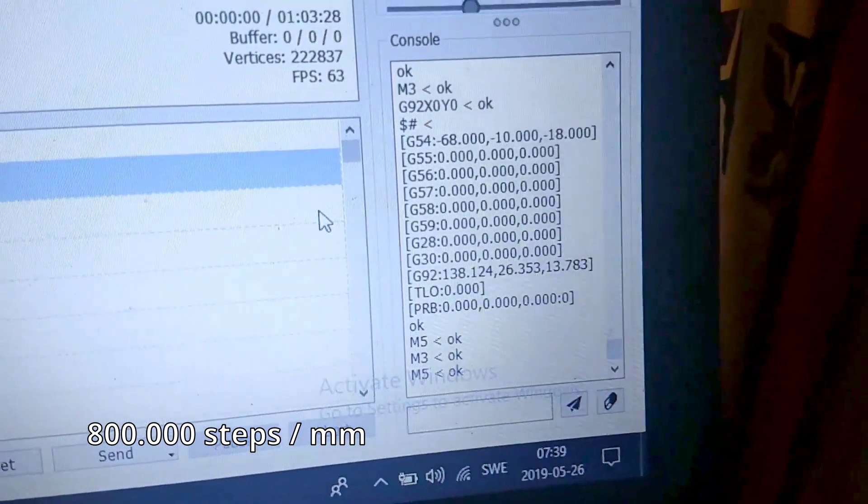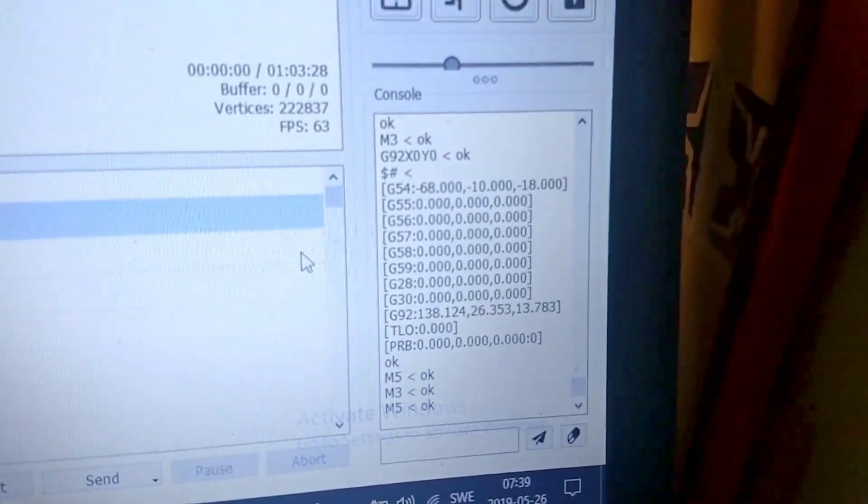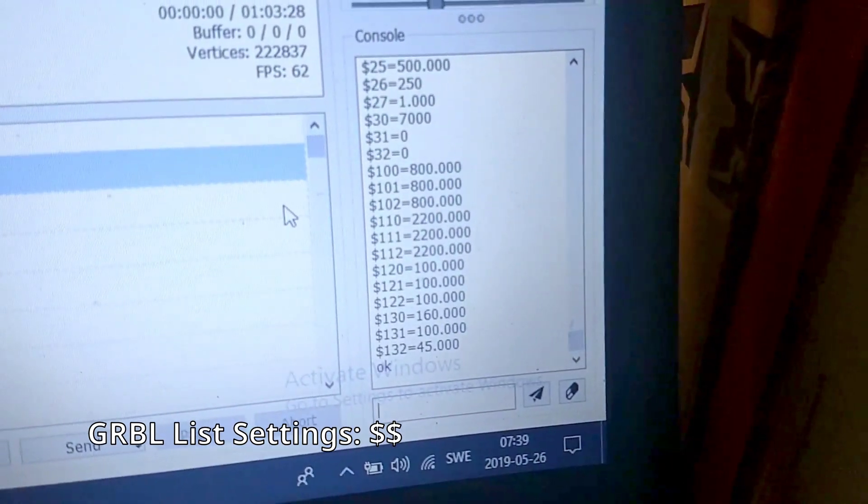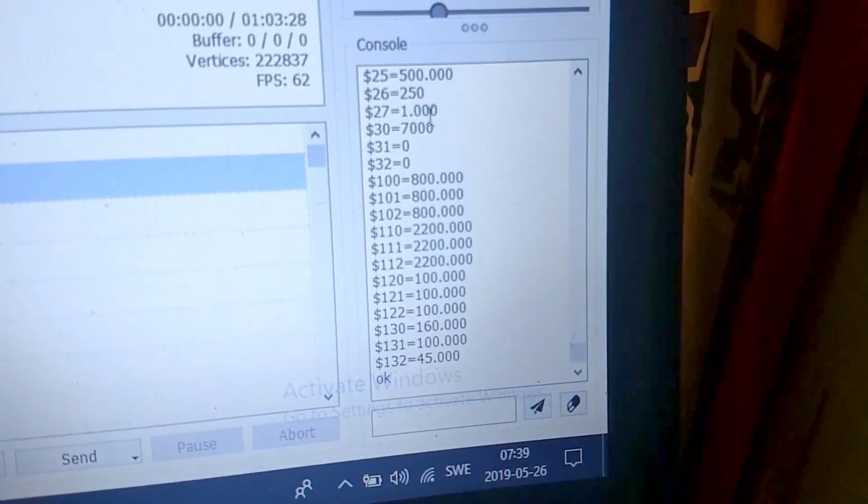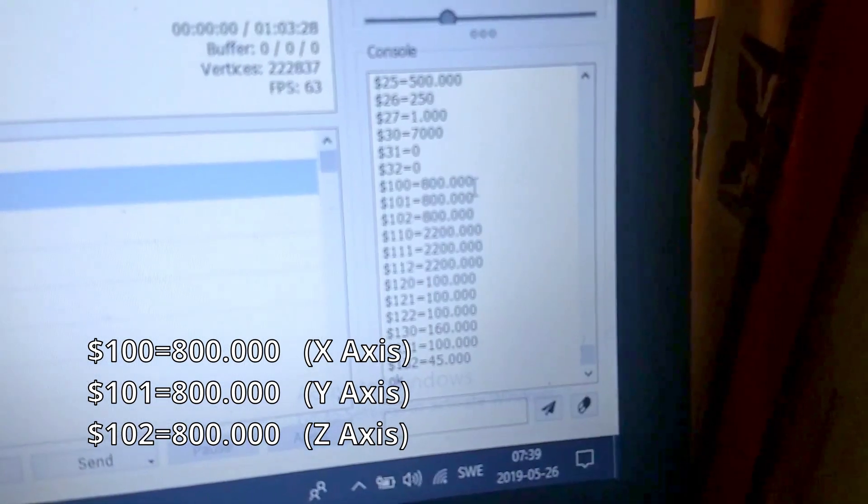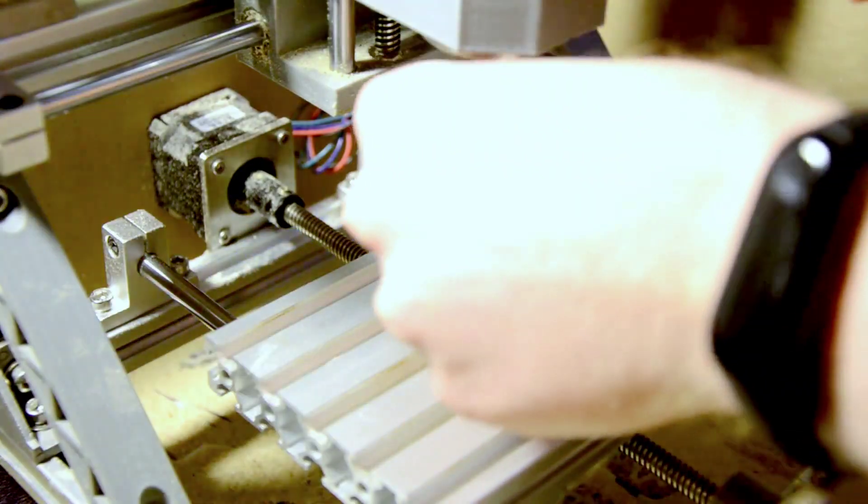The firmware on my machine is Grbl, and I'm using Candle as the interface. If you're using something else, you'll have to look up how it's configured, but the numbers will be the same. As you can see, the machine is already configured this way from the factory. Now we can do the calibration.